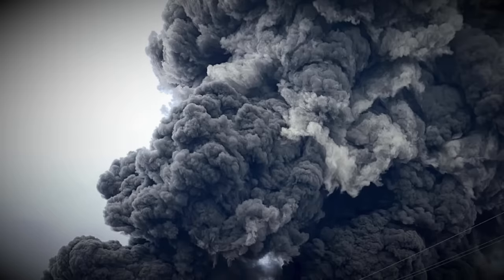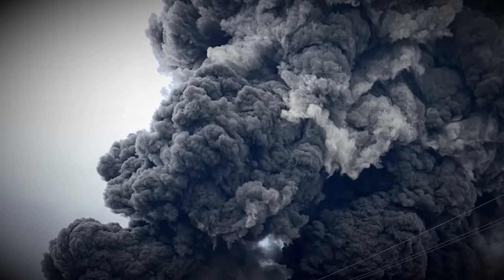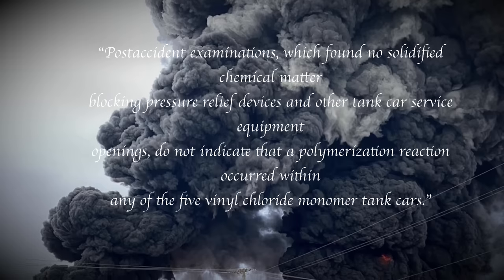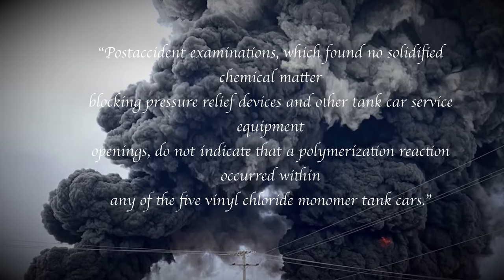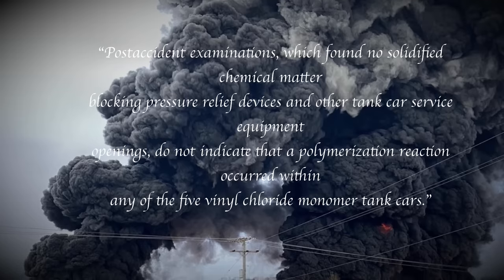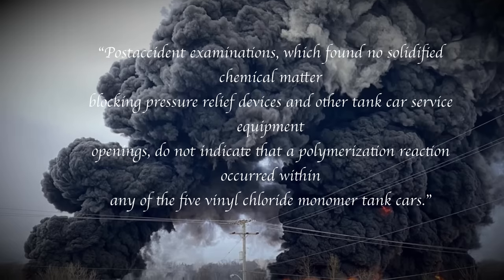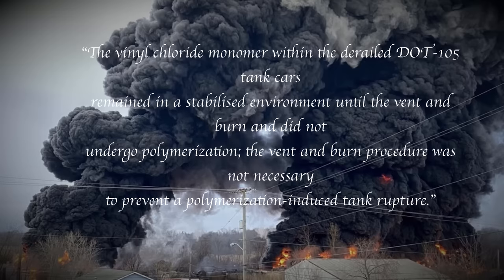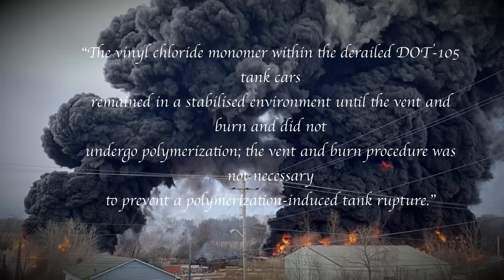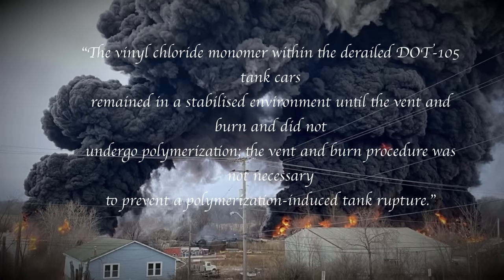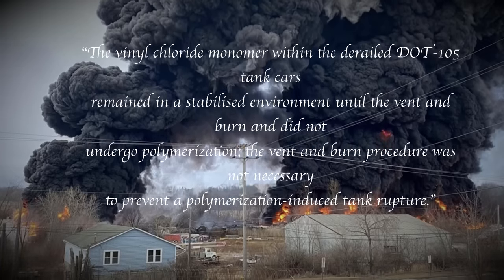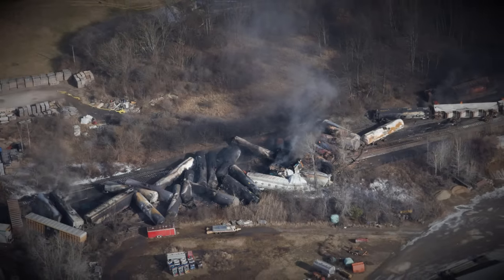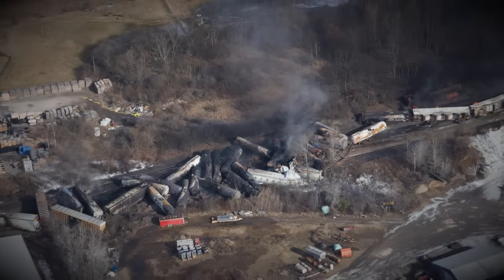Interestingly, during the accident analysis the vent and burn of the vinyl chloride was likely unneeded, as noted in the NTSB report. Post-accident examinations found no solidified chemical matter blocking pressure relief devices and other tank cars service equipment openings. This does not indicate that polymerization reaction occurred within any of the five vinyl chloride monomer tank cars. And the vinyl chloride monomer within the derailed DOT 105 cars remained in a stabilized environment until the vent and burn and did not undergo polymerization. The vent and burn procedure was not necessary, a polymerized induced tank rupture. The burn was the biggest cause of pollution from the disaster, and it turned out it was completely pointless. So you know that's grand.